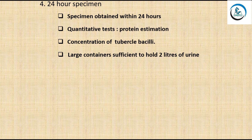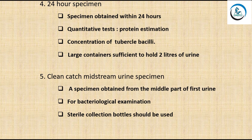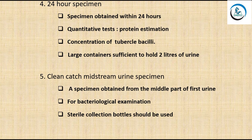For the 24-hour specimen, you need large containers sufficient to hold two liters of urine. The fifth type is the clean catch midstream urine specimen, used for bacteriological examination. Before collection, clean the external genital area with mild soap and water. The first part of urine is discarded as it may be contaminated with normal flora, and the middle portion is collected in sterile bottles.